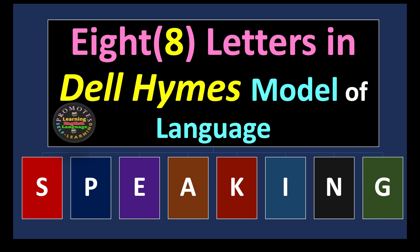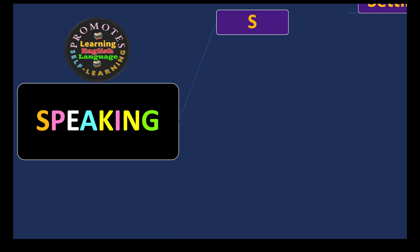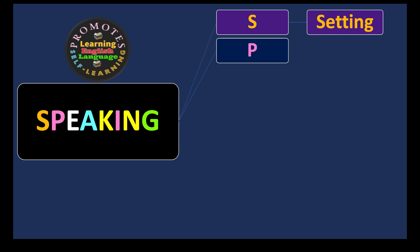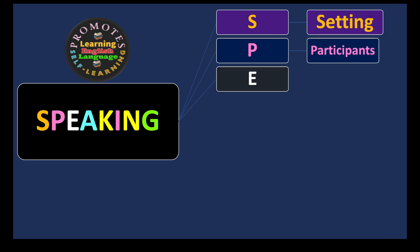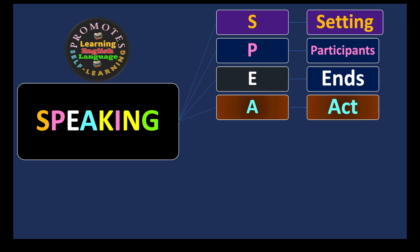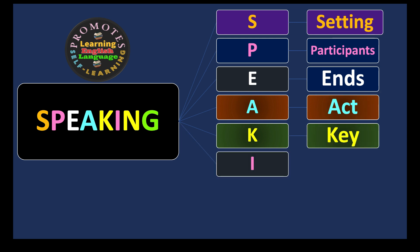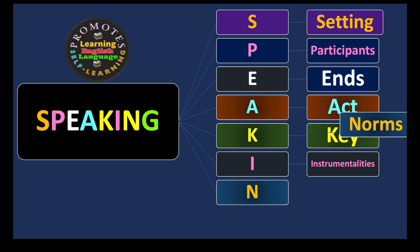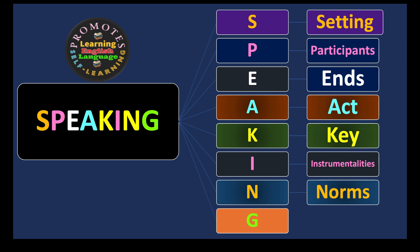Let's discuss each letter's significance, importance, meaning, and relevance in detail. The letter S stands for Setting, P stands for Participants, E stands for Ends, A stands for Act, K stands for Key, I stands for Instrumentalities, N stands for Norms, and G stands for Genres.